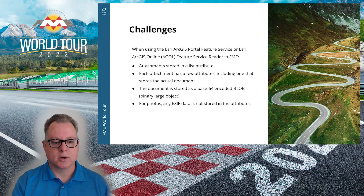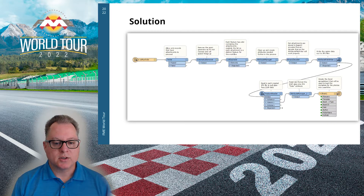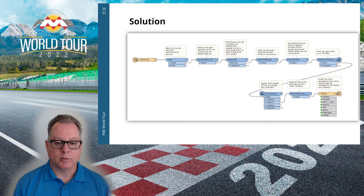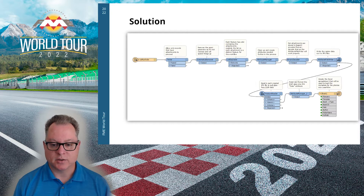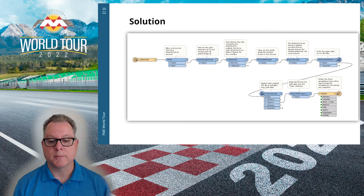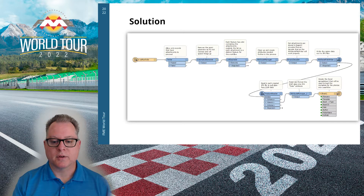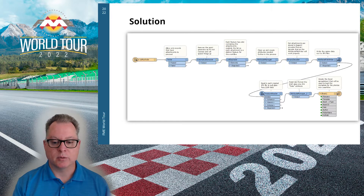Let's get into the solution. This is not a large workspace — there's a reader, eight transformers, and a writer. I'm using the Esri ArcGIS Portal Feature Service Reader, but all settings and behavior are identical for the ArcGIS Online Feature Service Reader. For this solution, I don't need the geometry, so the second transformer is a Geometry Remover. Removing the geometry improves the performance of the remaining process.